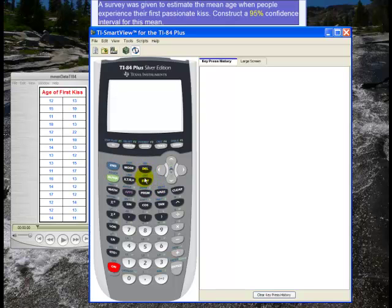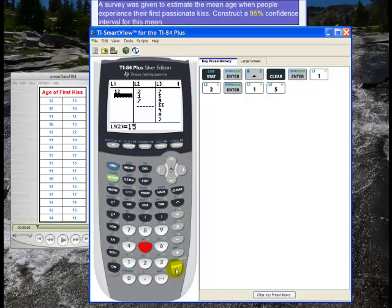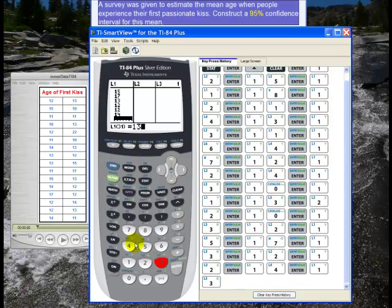To get to the data I hit STAT and then ENTER to edit it and I go up to my list 1, I clear it so that I can enter the data. So now I enter the data: 12 ENTER, 15 ENTER, and then I keep entering data until I'm finished, and then finally 13 ENTER and 11 ENTER.